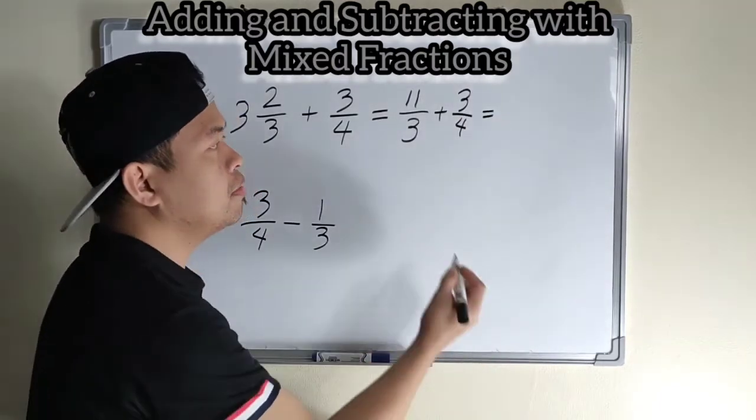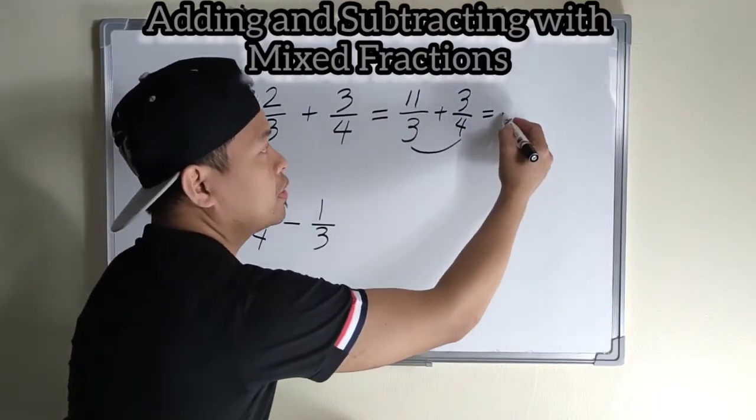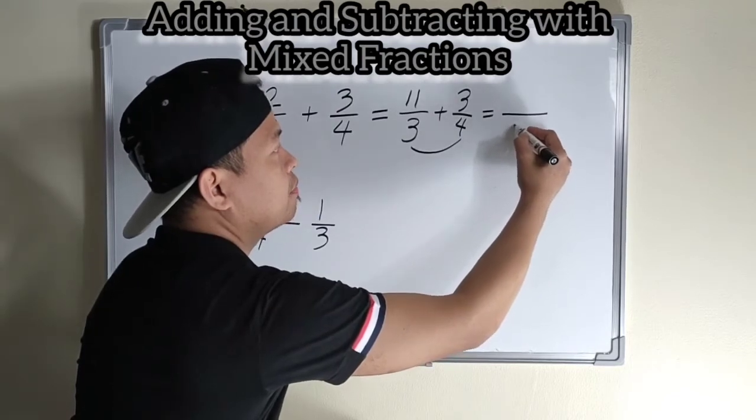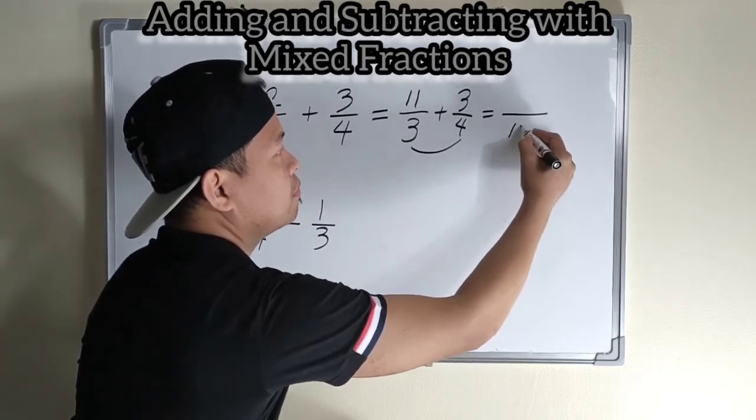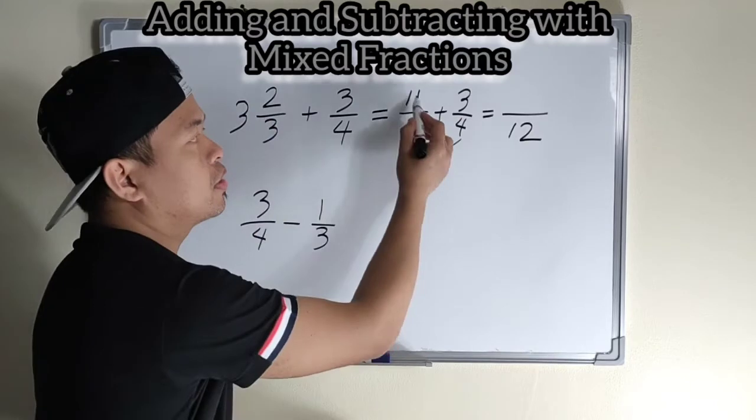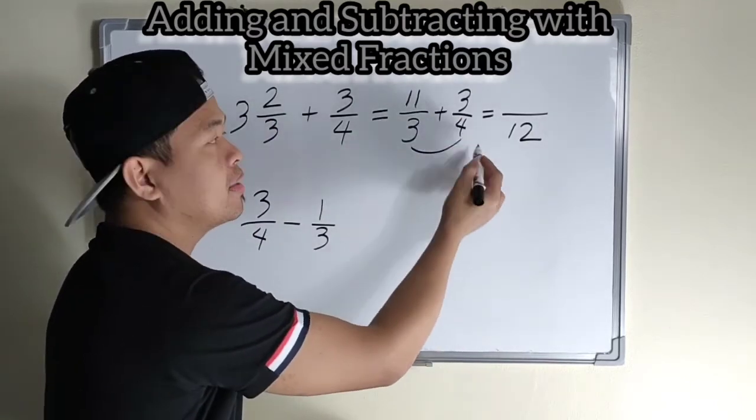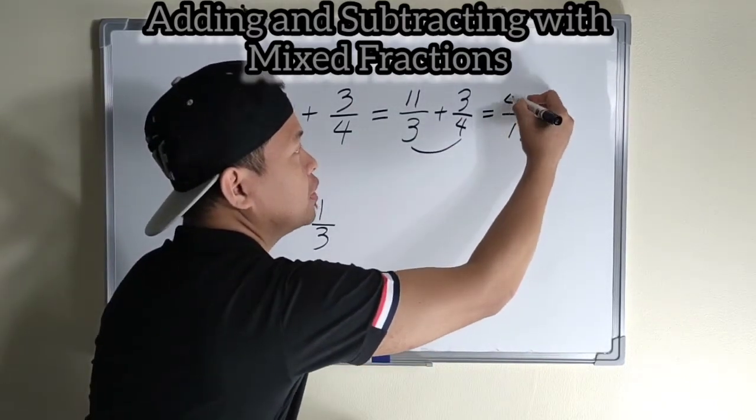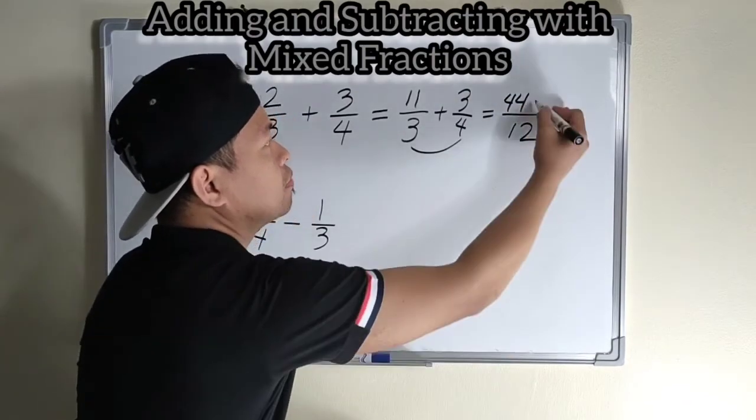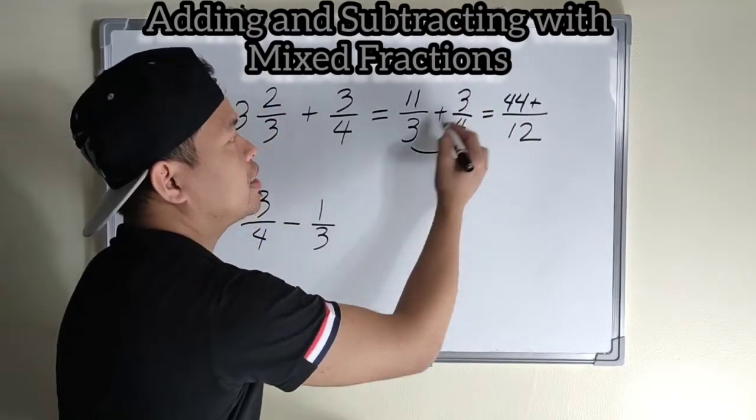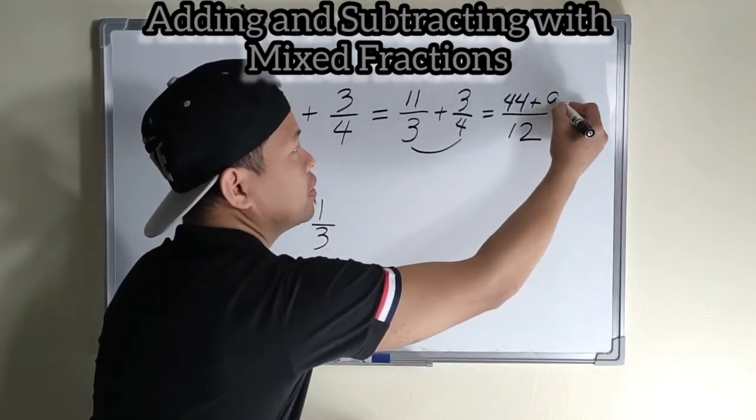Then, three times four is twelve. Then cross multiply, eleven times four is forty-four, plus three times three is nine.